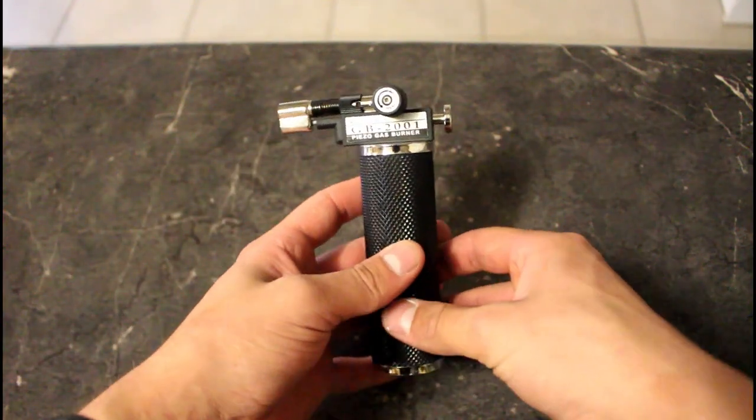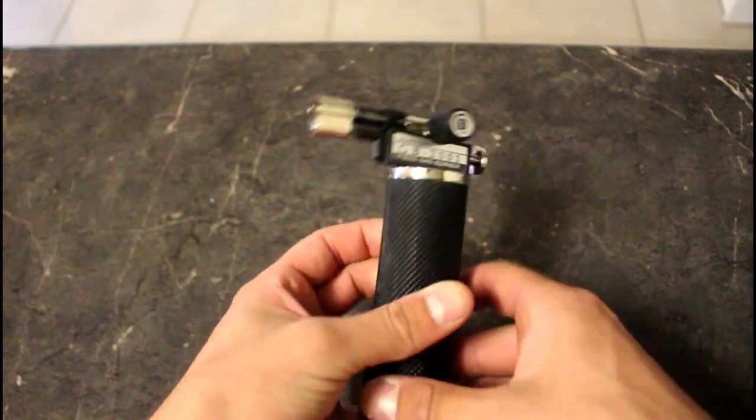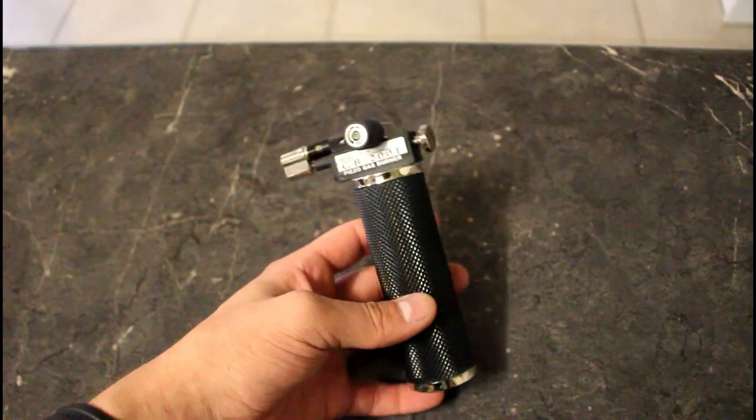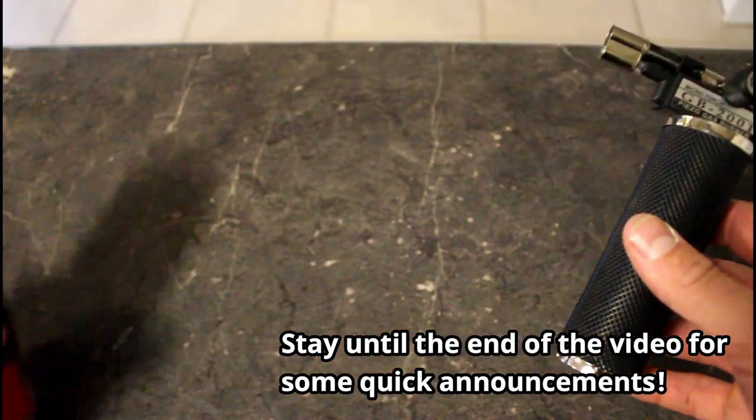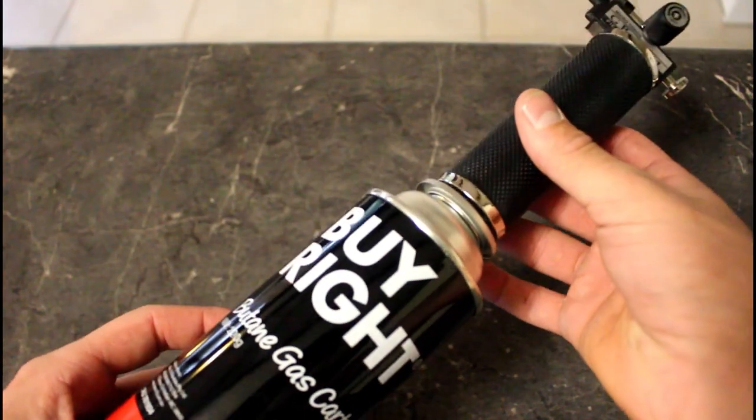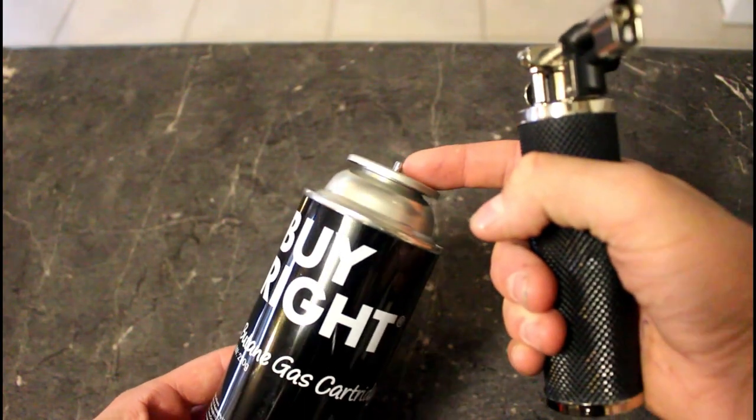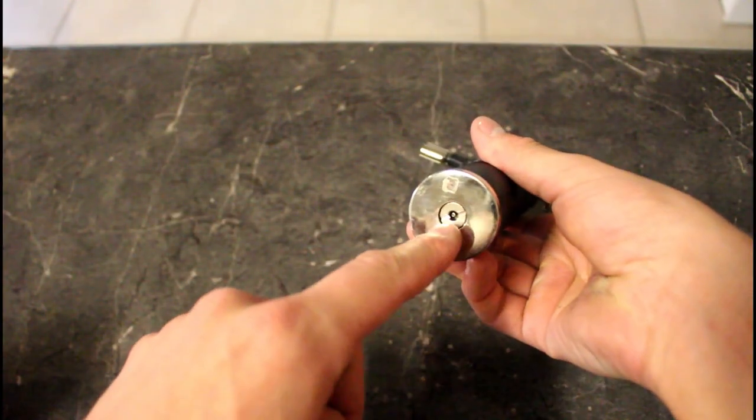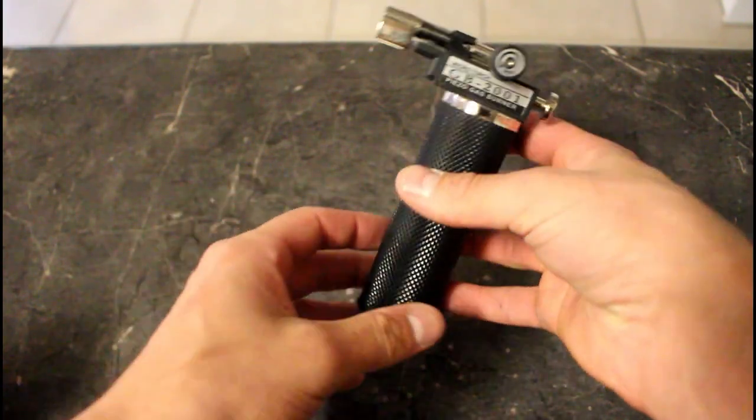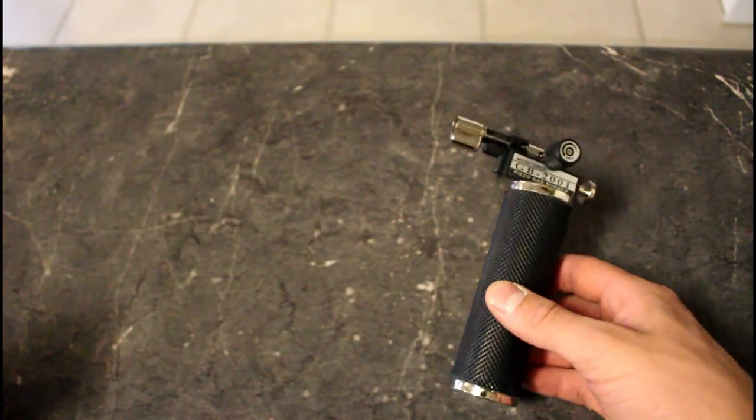So this here is a butane torch. That is the exact model there if you're interested. I bought this to use for a few experiments, and when I bought a butane canister with it and tried to fill it up, I realized something. This part on the canister is too wide to even reach that little valve. It doesn't fit through that gap. So that's an issue, but I have an idea on how to solve it.